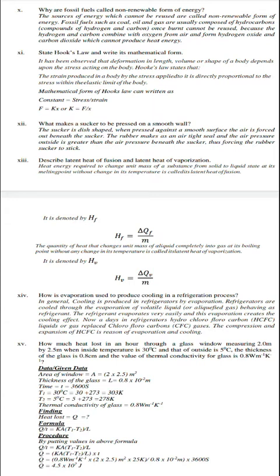Question 14 is how is vaporization used to produce cooling in refrigeration process? Simply we will explain that in general, cooling is produced in refrigeration - refrigerators are cooled through vaporization of volatile liquid behaving as a refrigerant. The refrigerant evaporates very easily and its vaporization creates the cooling effect. Nowadays refrigerators use chlorofluorocarbons - the compression and expansion causes evaporation and cooling.